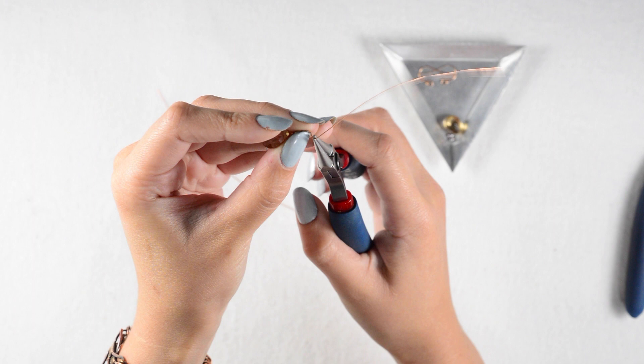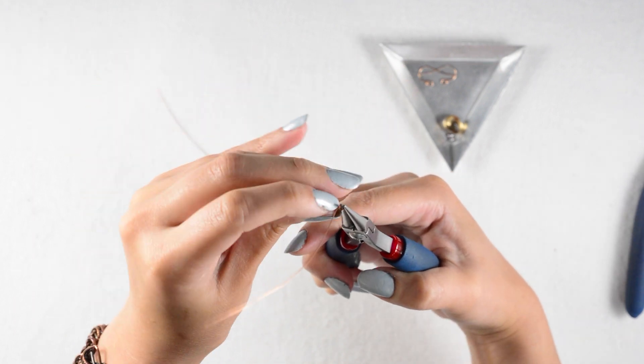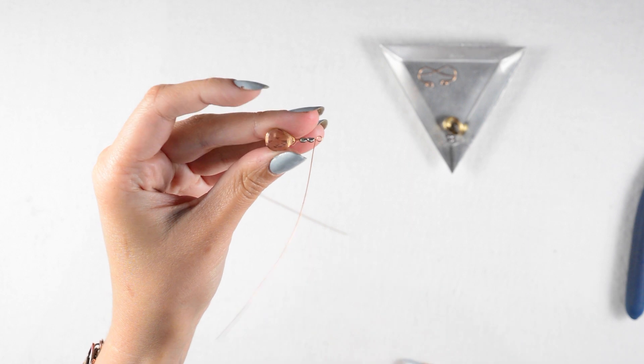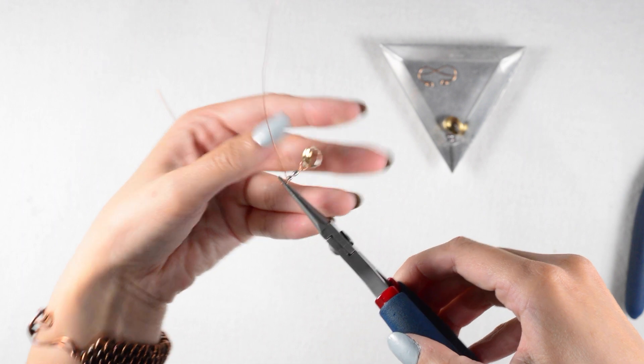This bend will become our top wrap and you want to make sure this wrap is facing the same way as our briolette bail down below. That way when we string this onto our ear wire, that briolette will be facing forward. So now I will start my wire wrapped loop.